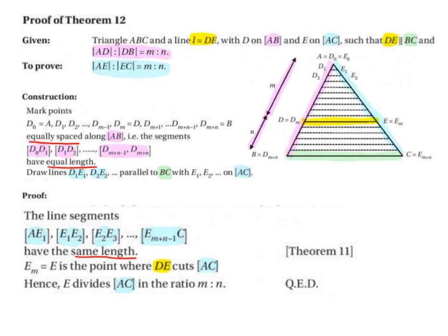It's really helpful to colour code things when you're trying to talk about proofs. Remember, we're trying to prove that AE to EC is equal to M to N.